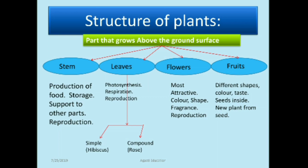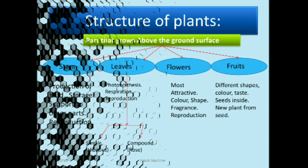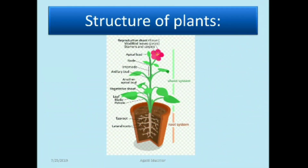Simple leaves — for example, hibiscus; compound leaves — for example, rose. The third part is the flower, which has attractive color, shape, and fragrance, and is also used in reproduction. The last part is fruit — fruits have different shapes, colors, and tastes, and the seeds inside the fruit are useful to produce a new plant. This diagram shows the structure of a plant including tap root, lateral roots, leaves, leaf blade, petioles, flowers, nodes, internodes, etc.